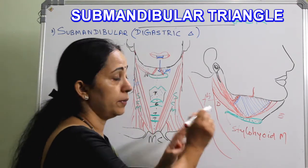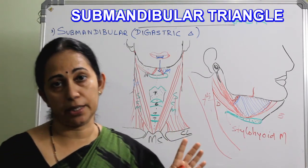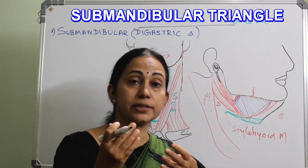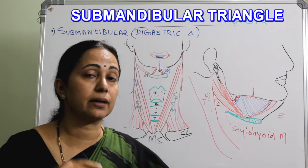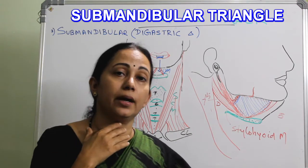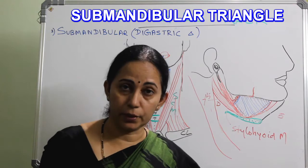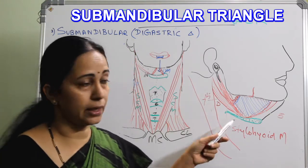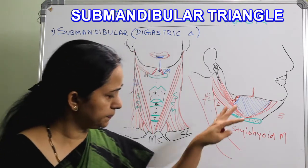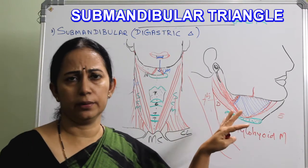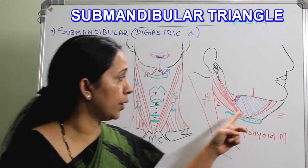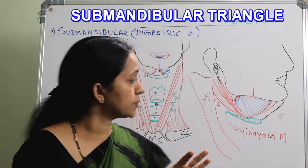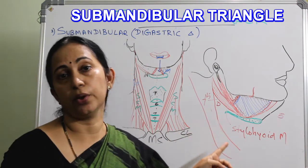The boundaries of the submandibular triangle are easy to remember. Above by the mandible, below by the hyoid bone, medially by the anterior belly of digastric, and laterally by the posterior belly of digastric along with the stylohyoid muscle. The floor is mainly formed by the mylohyoid muscle, with a very small contribution from the geniohyoid muscle.